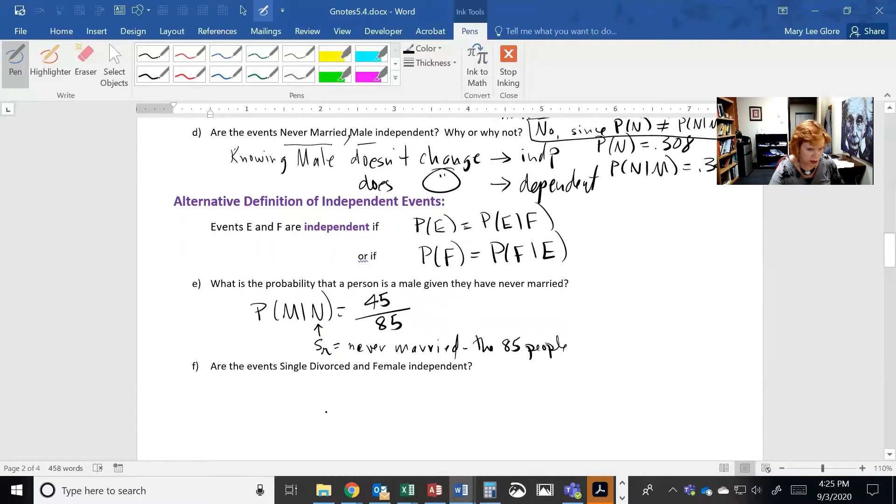Are the events single, divorced, and female independent? All right, so how would I know that? They're going to be independent if the probability of being divorced is equal to the probability of being divorced given that they're female. Or I'd only have to check one of these. If one's true, the other one is. Or the probability of being female is equal to the probability of female given divorced.